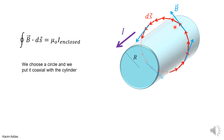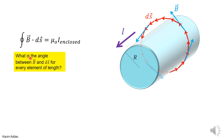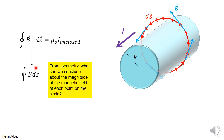We choose the ds vectors to go around this way because if you curl your fingers in the direction of ds, your thumb points in the positive sense of the current, which is the direction of the actual current. That ensures the integral of B·ds will be a positive number. For every element of length on this Ampere loop, B is in the same direction as ds, so B·ds becomes B ds.